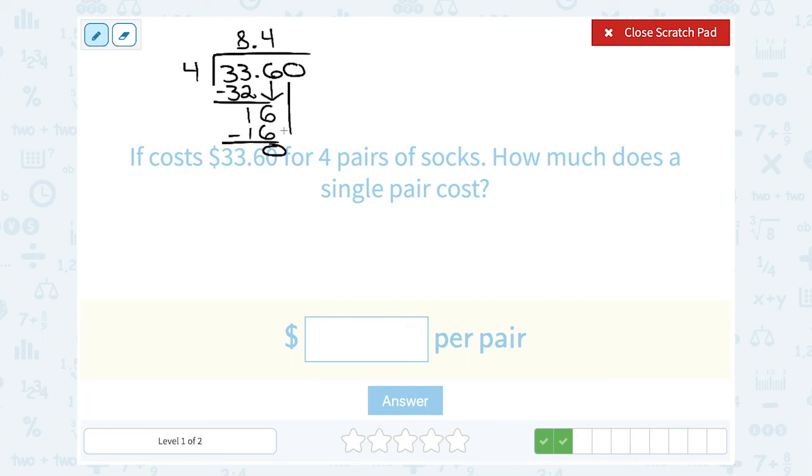Or you could say, let me bring down that one more zero. How many times does four go into zero? Zero times, and there's no remainder.